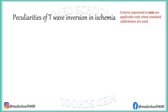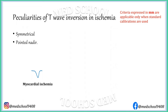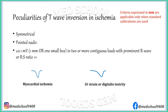T wave inversion in myocardial ischemia is peculiarly symmetric with a pointed nadir. T wave inversion due to other causes like left ventricular strain or digitalis toxicity are asymmetrical with a blunt nadir. This symmetric and pointed T wave inversion should be more than 0.1 mV (1 mm or one small box) in two or more contiguous leads, with a prominent R wave or RS ratio more than 1.